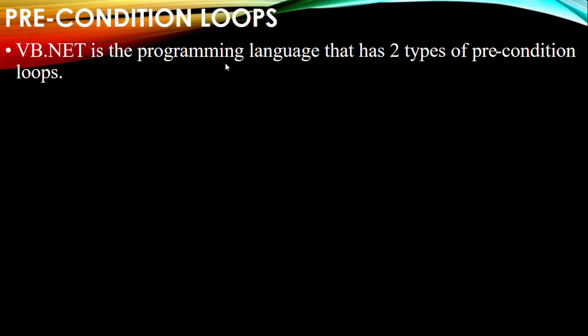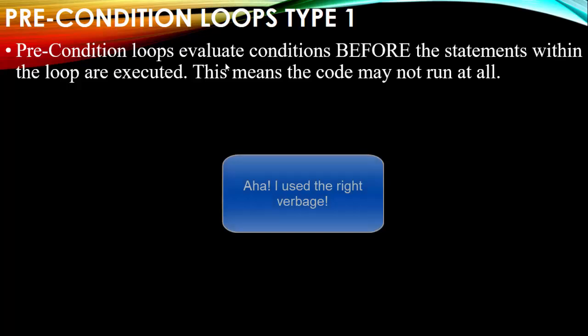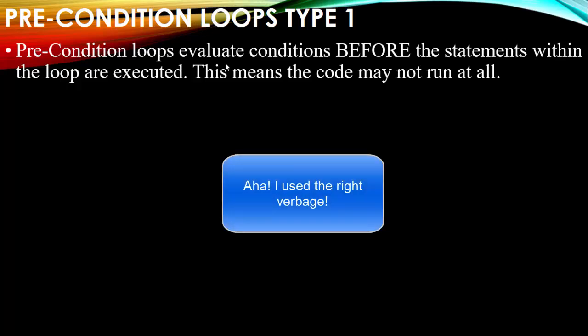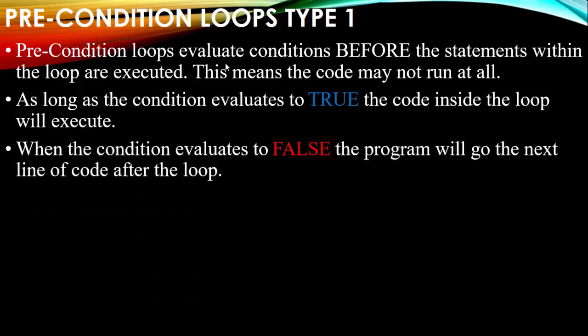Precondition loops evaluate conditions before the statements within the loop are executed. This means the code may not run at all, because it checks the condition first, then runs the code inside the loop. As long as the condition evaluates to true, the code inside the loop will execute. When the condition evaluates to false, the program goes to the next line of code after the loop.